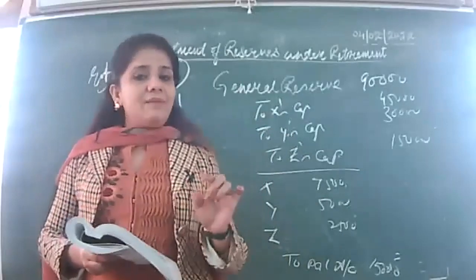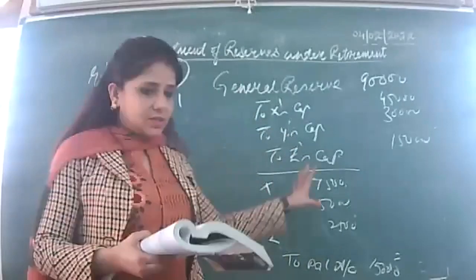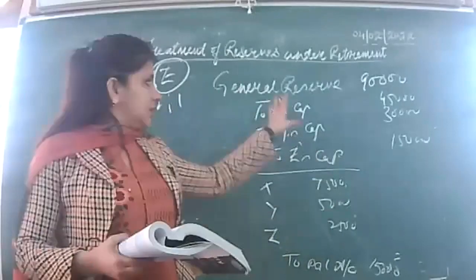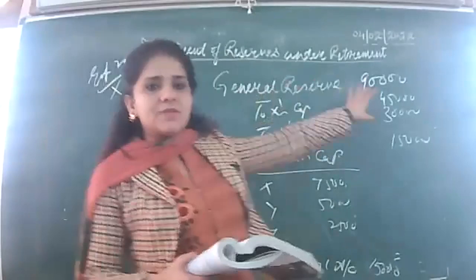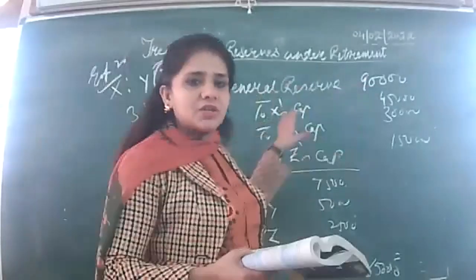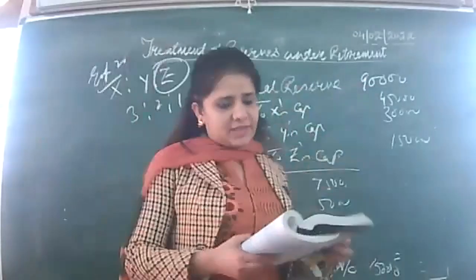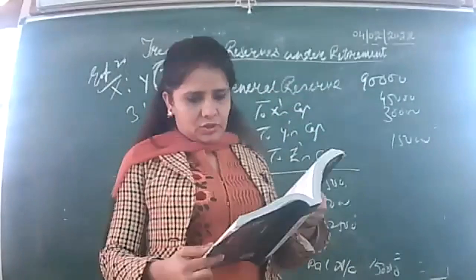Similarly, in the question we have workmen compensation reserve. If there is no claim against it, the same entry is passed: workmen compensation reserve account credited to X's capital, to Y's capital, to Z's capital. This is the way how the distribution is to be done.